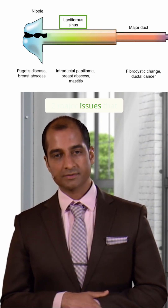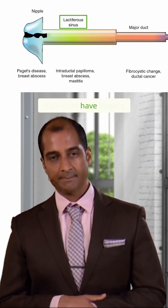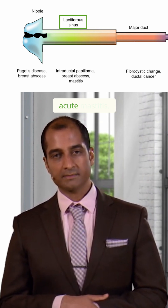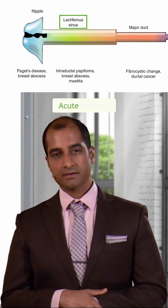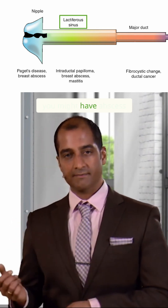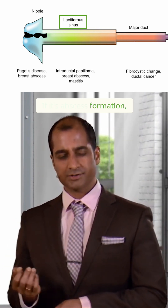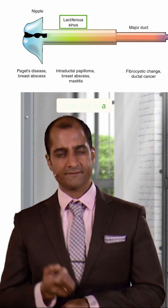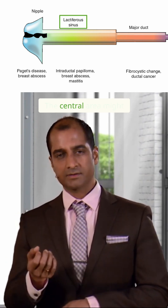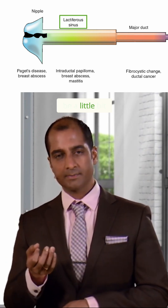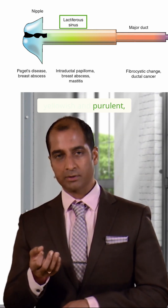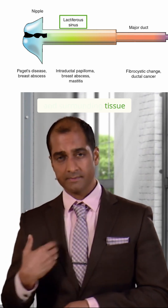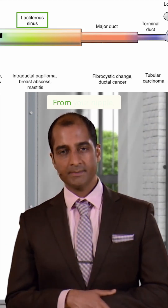With the nipple, two major issues that could occur: you could have Paget's disease, or you could have acute mastitis. With acute mastitis, you might have abscess formation. Close your eyes — what does the breast look like in a female there? The central area might be a little bit yellowish and purulent, and the surrounding tissue, inflammatory, will be erythematous.